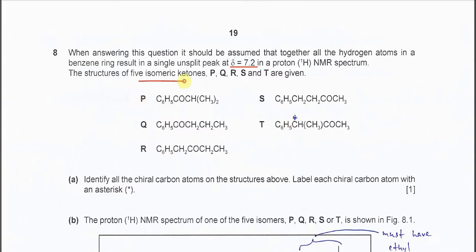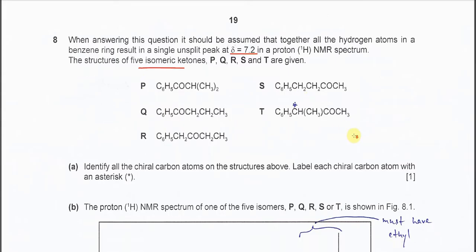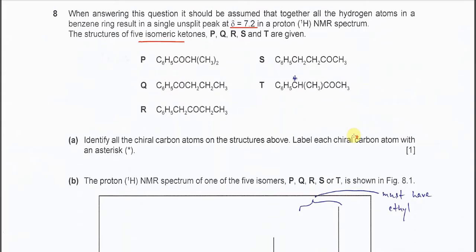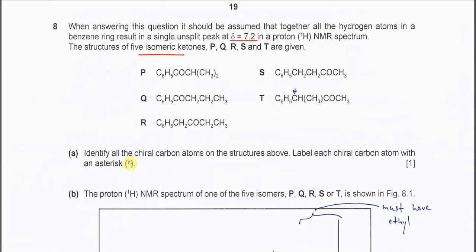We have five isomeric ketones P, Q, R, S, T, and the structural formulas are given. For part A, identify all the chiral carbon atoms on the structures above.